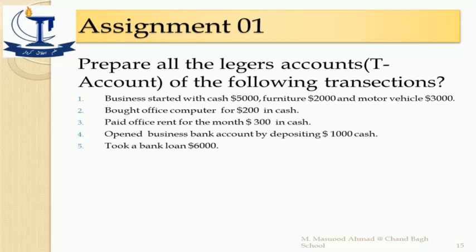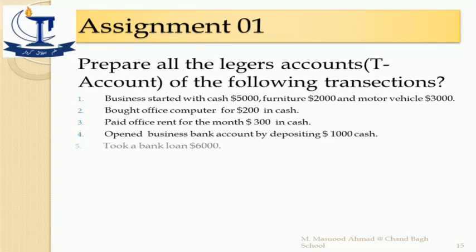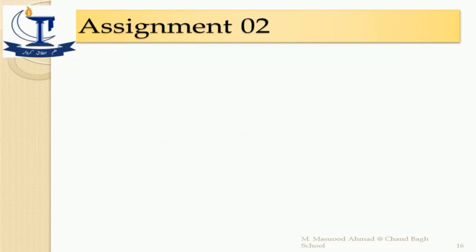Open a business bank account by depositing cash — one asset is increasing and another is decreasing. In the fifth transaction, you took a loan: when the bank grants you a loan, they deposit the amount in your bank account, so your bank balance will increase. The source of this balance is a bank loan, which is your liability — liability is increasing in this case.